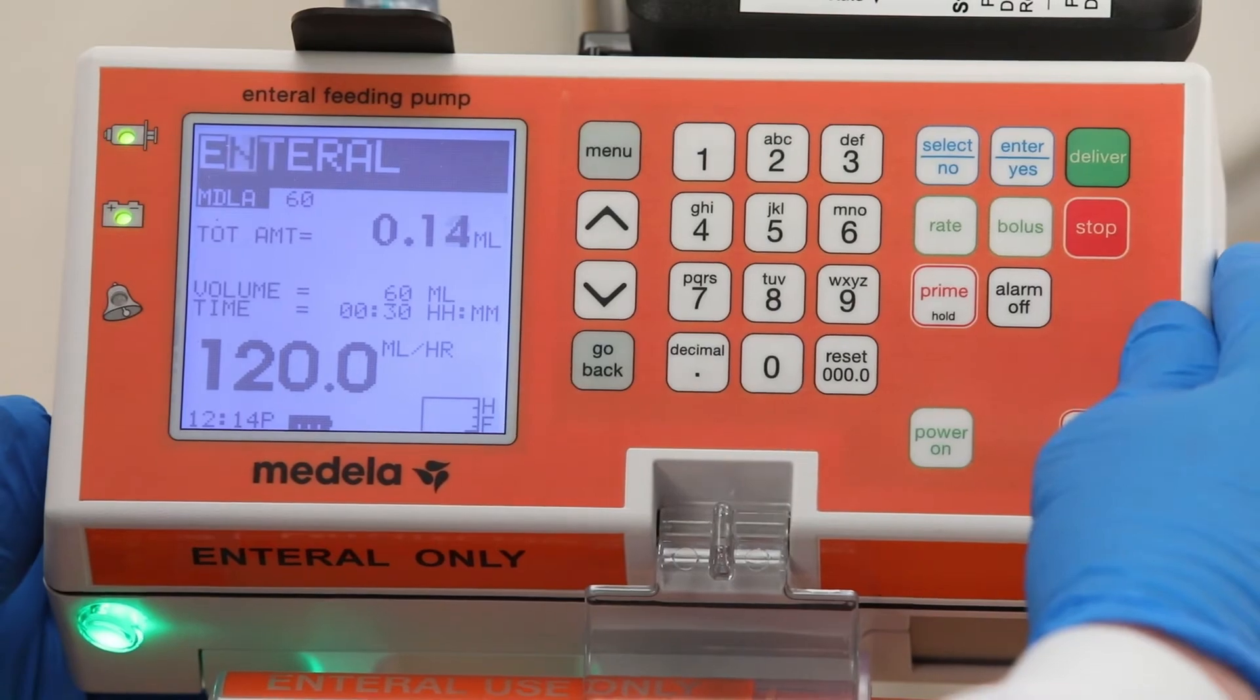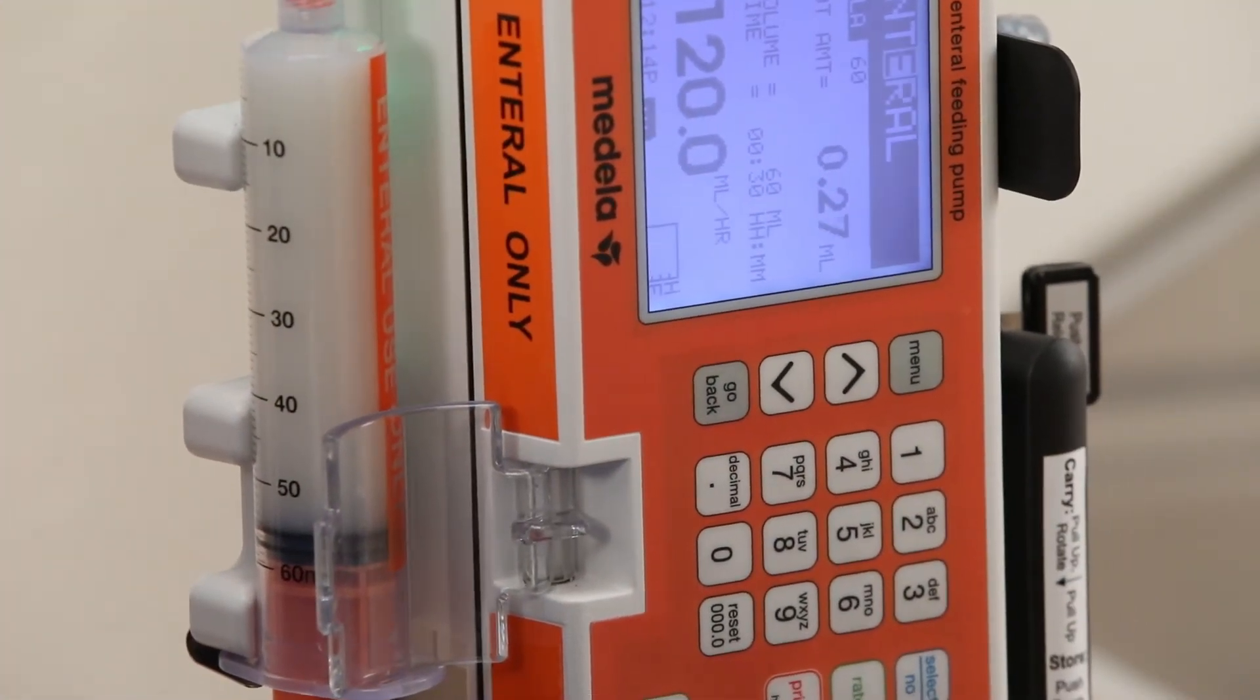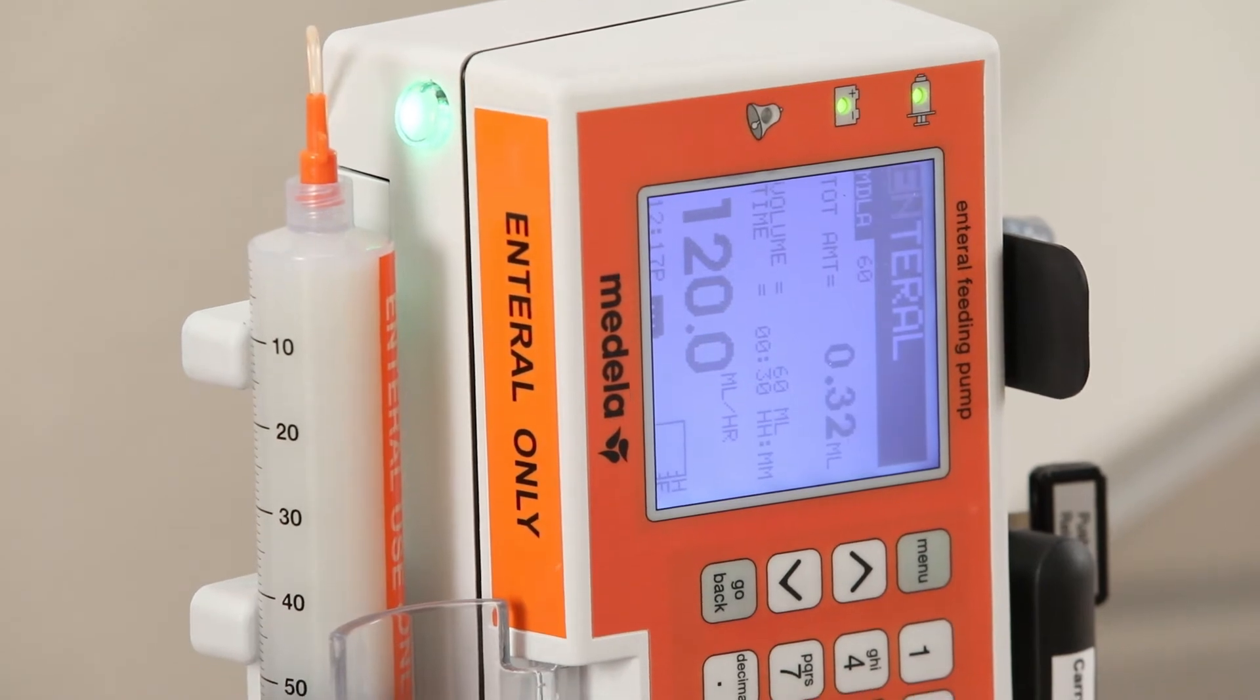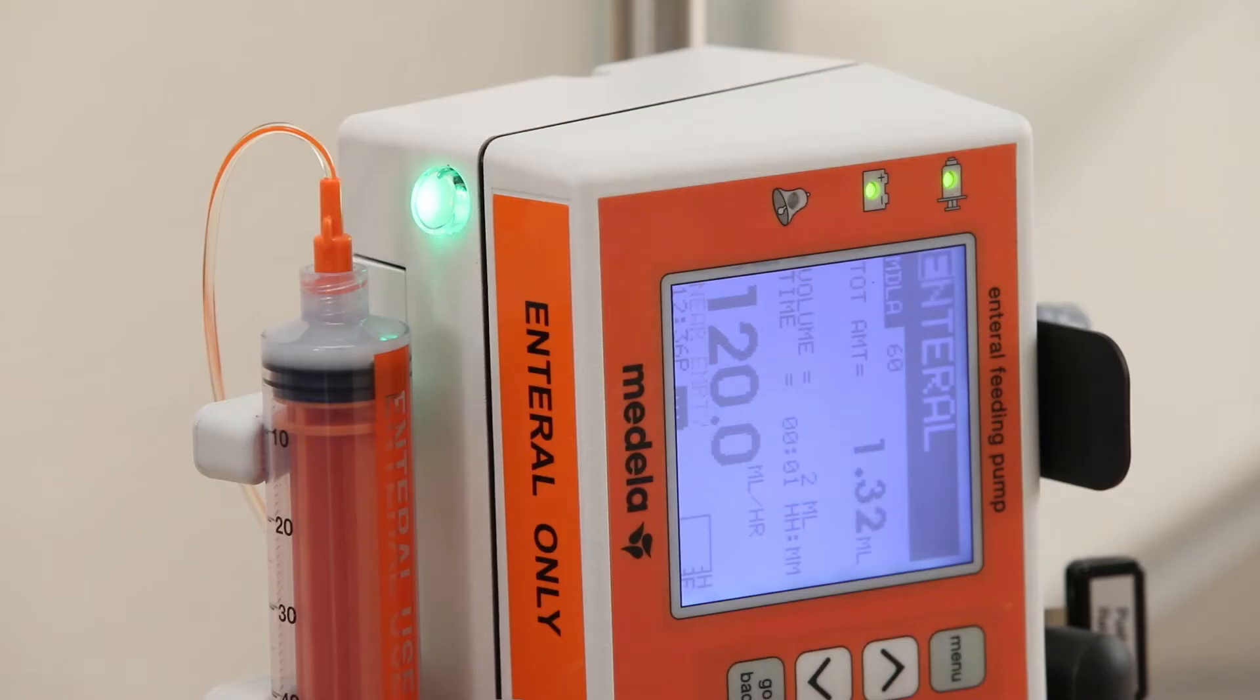Once the feeding has started, rotate the pump upright by applying a gentle force in the desired direction. Rotate the pump vertically so that the syringe tip is upright to maximize fat delivery. Once feeding is 5 minutes from completion, an alternating red-green indicator light will flash.